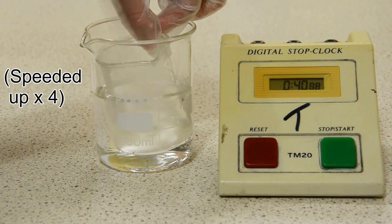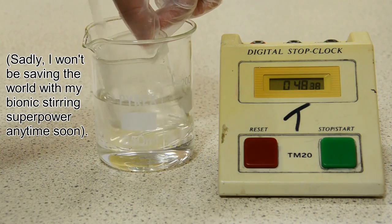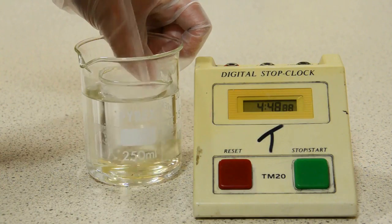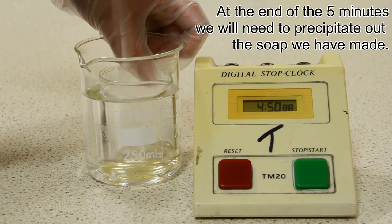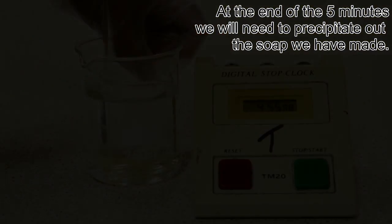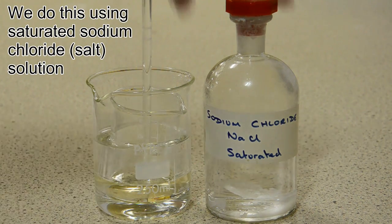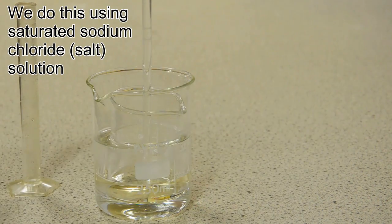Once we've stirred the mixture inside the beaker of hot water for five minutes, we're going to need to precipitate out the soap because at the moment it's just a suspension inside the mixture. To do this we're going to need sodium chloride or common salt. I've got a saturated solution of sodium chloride here.